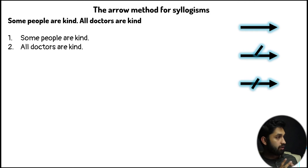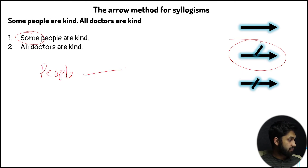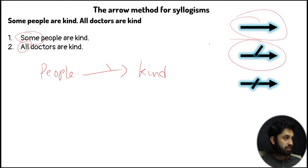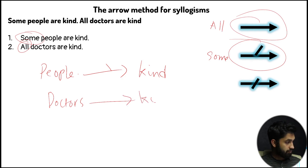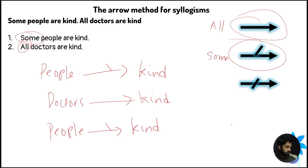Now let's try: 'some people are kind, all doctors are kind.' The keyword 'some' gives us the 50% arrow for the first statement: people → kind. For the second, 'all' gives us the 100% arrow: doctors → kind. Now we merge the diagrams together by combining at the 'kind' node to form a single merged diagram.